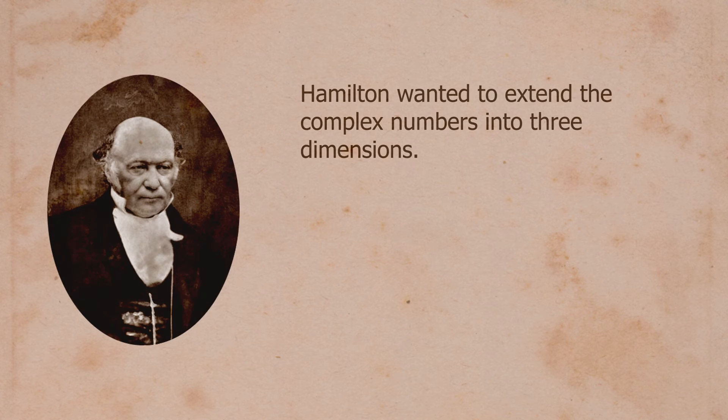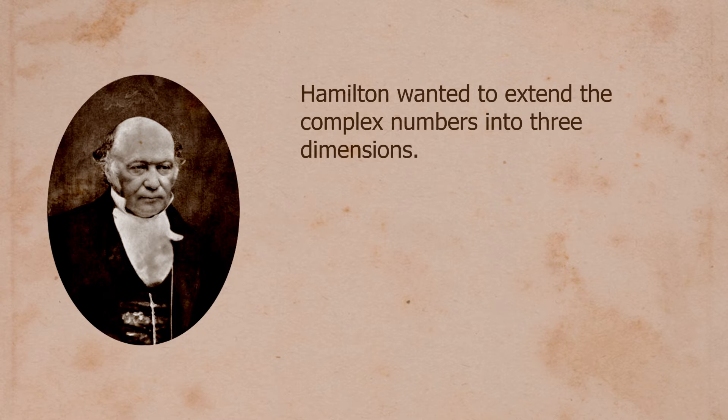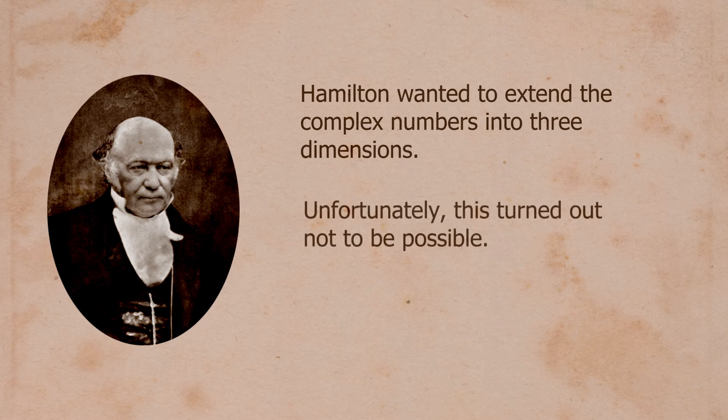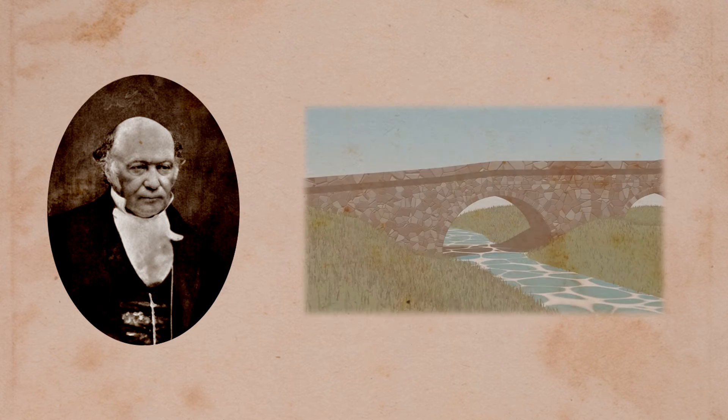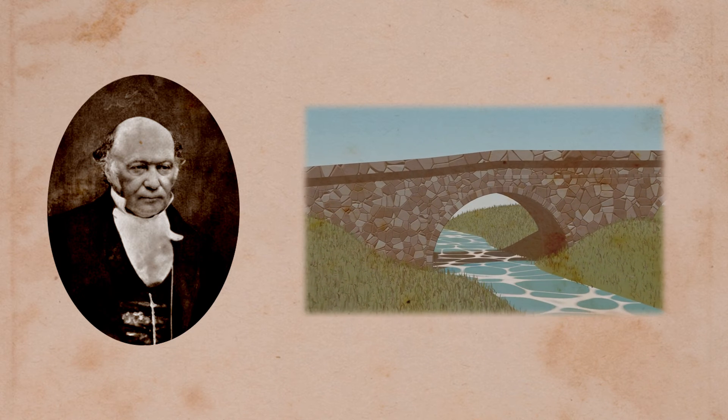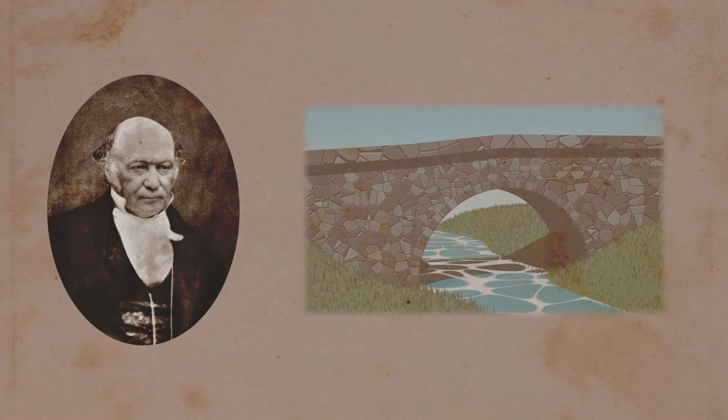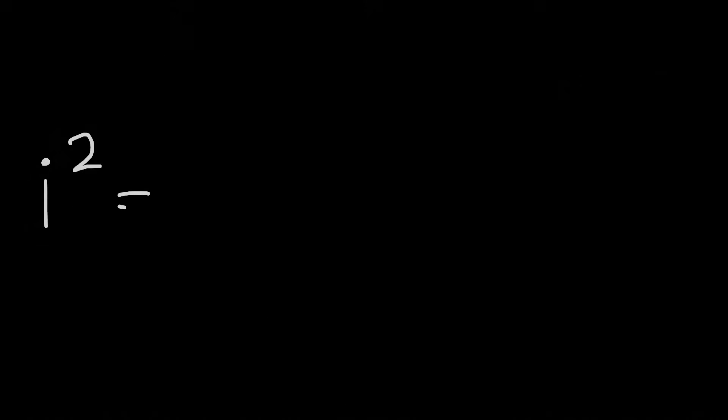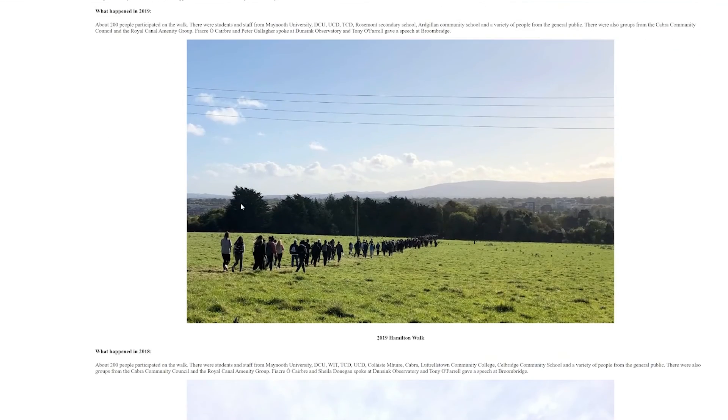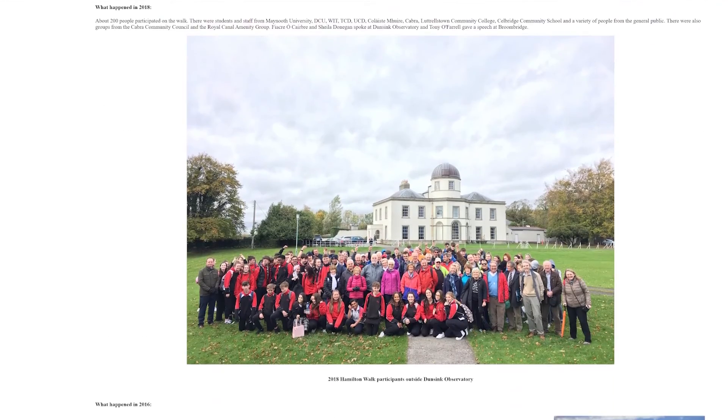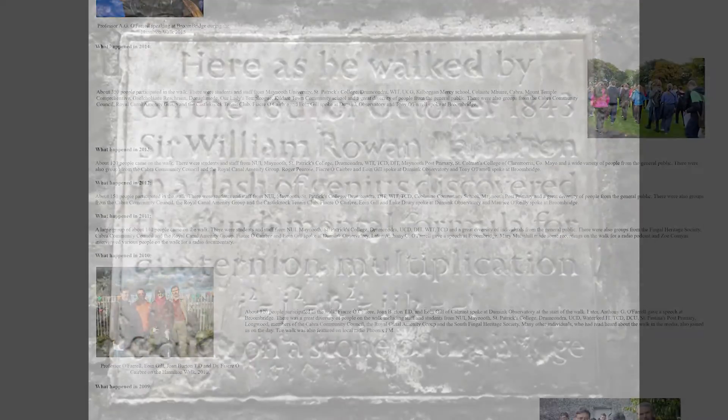Hamilton wondered if it would be possible to extend this to three dimensions. Well, unfortunately, it turned out three dimensions didn't work. But, while walking one day with his wife, he realized how to extend complex numbers to four dimensions. He was apparently so excited that he stopped under the Broom Bridge just outside of Dublin, and carved into the stone the identity that makes these numbers possible. There is now a Hamilton Walk to commemorate the event where people gather to trace Hamilton's steps along the path to the bridge, which still stands.